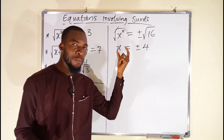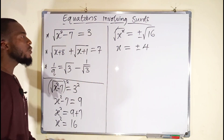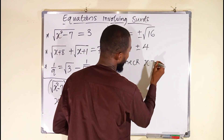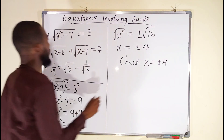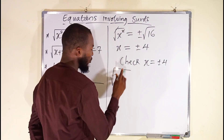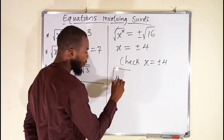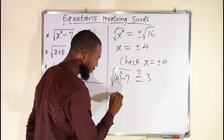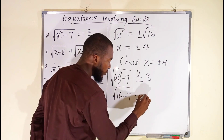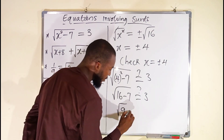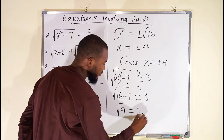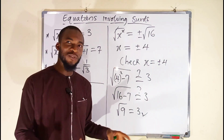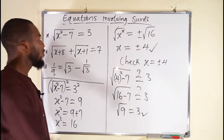This means x could be positive 4 or negative 4. But we have to check whether this is true. In the main equation, we substitute x equals plus or minus 4. Starting with positive 4: square root of 4 squared minus 7. 4 squared is 16, minus 7 gives 9. Square root of 9 is 3. Is this equal to 3? Definitely yes. And since squaring negative 4 also gives positive 16, plus or minus 4 will satisfy the main equation. Hence, this is our real solution for the first equation.